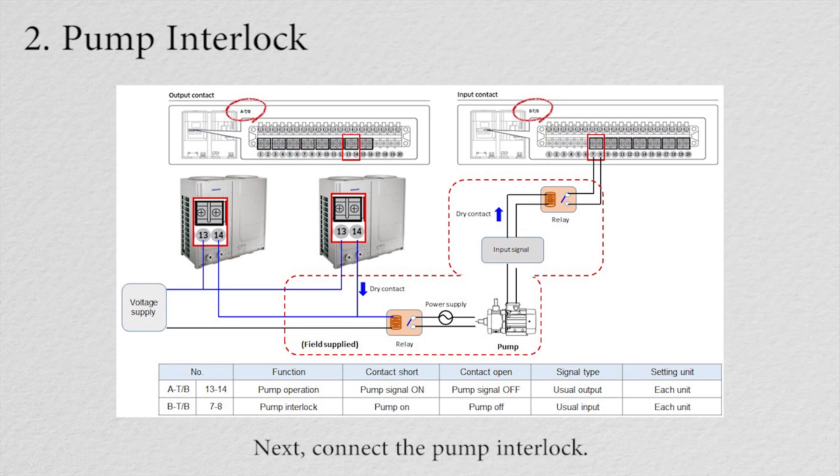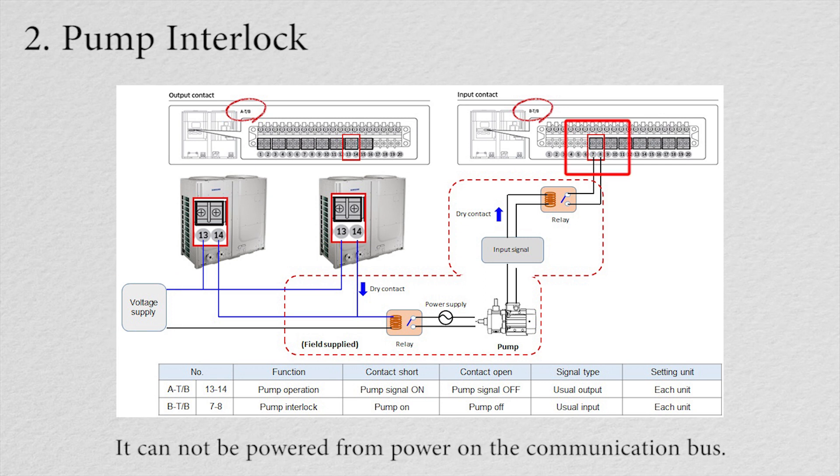Next, connect the pump interlock. Here is an example of a pump interlock. Voltage is required to activate the relay. It cannot be powered from power on the communication bus.